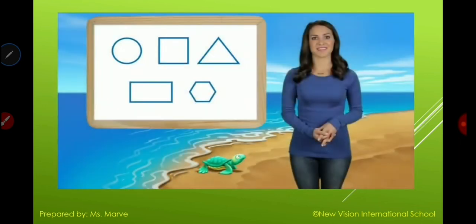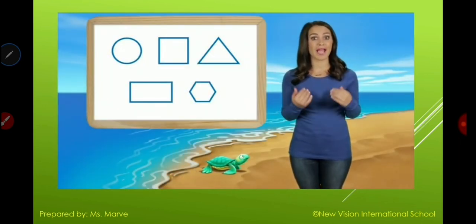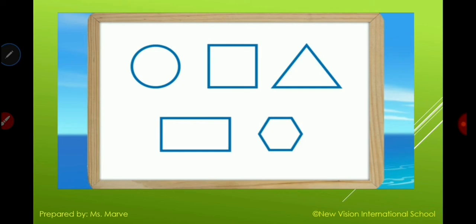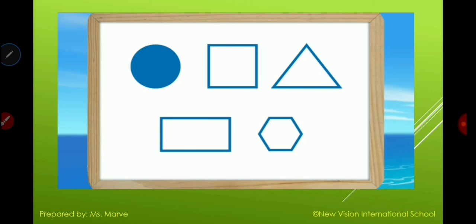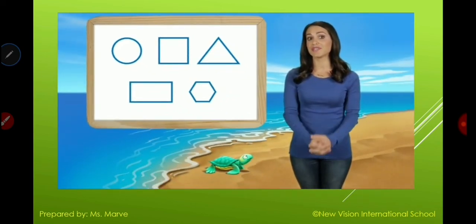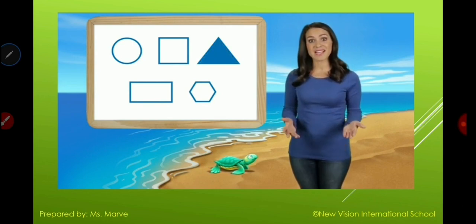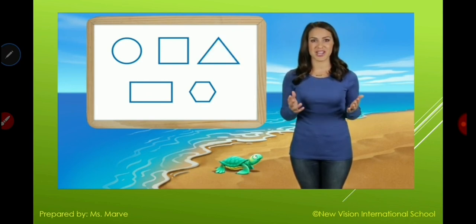Welcome to 'What's My Shape' — the game where I describe a shape, you find it, and then I say its name. Ready? This shape has four sides of equal length — it's a square! This shape is round and has no sides — it's a circle! This plane shape has six sides — it's the hexagon! This shape has two long sides and two short sides — it's a rectangle! The last shape has three sides — yes, that's the triangle! Thanks for playing 'What's My Shape,' goodbye until next time!